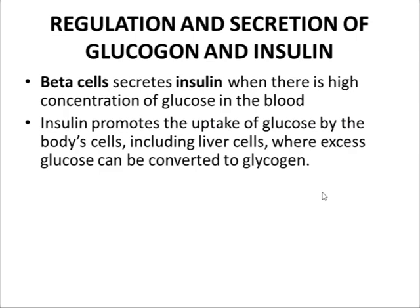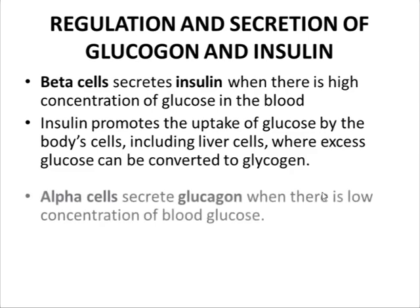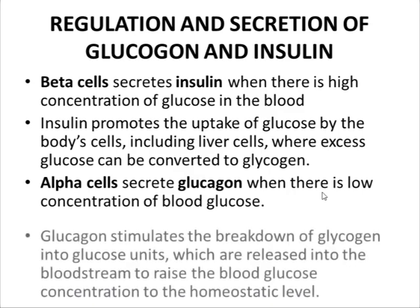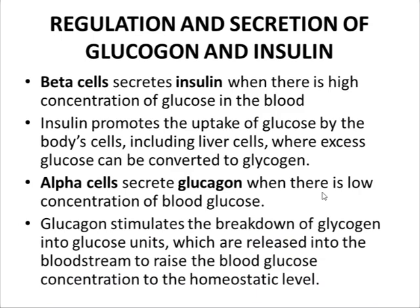When there is a low concentration of glucose in the blood, the alpha cells of the pancreas secrete the hormone glucagon. Glucagon is responsible for increasing the concentration of glucose in the blood. It stimulates the breakdown of glycogen into glucose units, which are released into the bloodstream to raise blood glucose concentration to the homeostatic level.